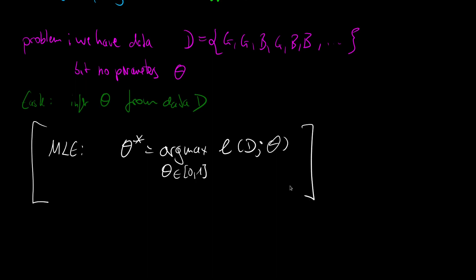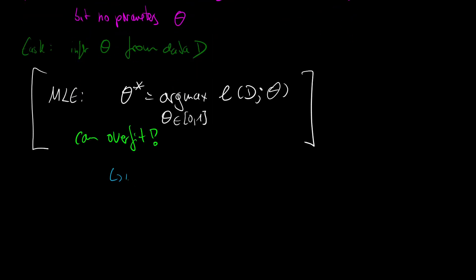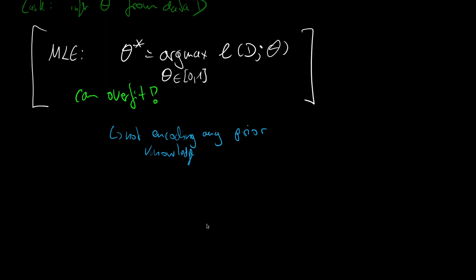The MLE led us to a good estimate for theta, but the problem is that the estimate is probably overfitted. Depending on how the data is given — if it is noisy — the maximum likelihood estimate can be a bad guess; it can overfit. The problem is that we are just maximizing the likelihood with respect to the data, but we are not encoding any prior knowledge.